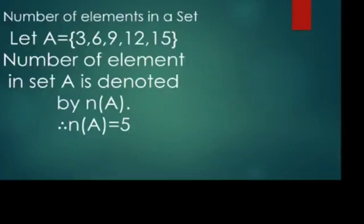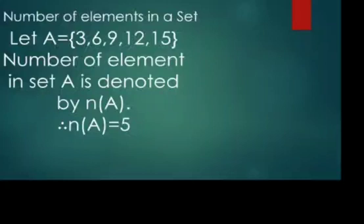One more concept: number of elements in a set. We simply count the number of elements present in the set. For example, set A contains elements 3, 6, 9, 12, 15. The total number of elements is 5. The number of elements in set A is denoted by n(A). So n(A) = 5.